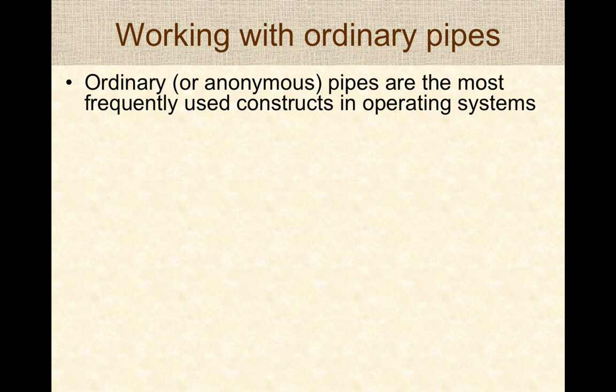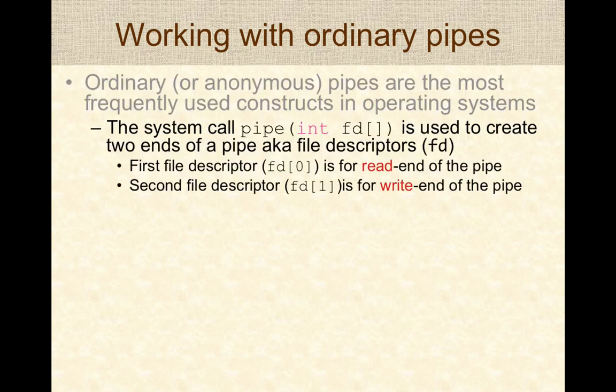Let's see how to work with ordinary pipes. Ordinary anonymous pipes are the most frequently used constructs in operating systems. The pipe is created through a system call called pipe(), which returns two integers known as file descriptors. The file descriptor is an internal concept to the operating system, and it returns an integer denoting each descriptor. The first entry in the array fd is filled in with the read end of the pipe, and the second file descriptor contains the write end of the pipe.